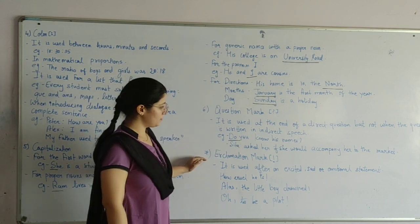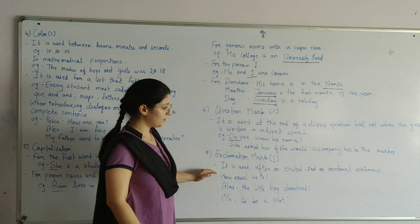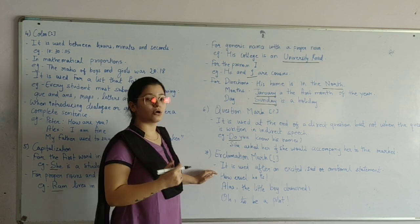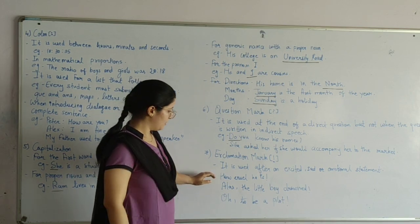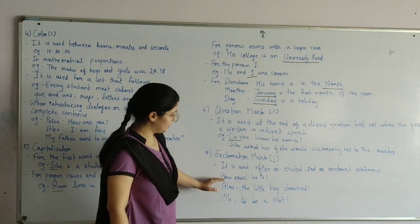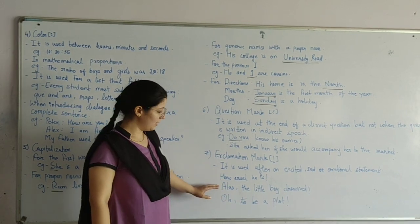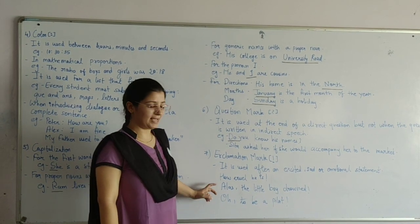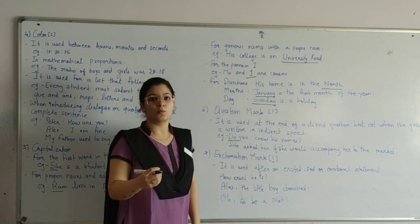Number seven, exclamation mark. It is used after an exciting, sad, or emotional state. For example, how will he be this! Next, alas, the little boy John! And last, oh, to be a pilot! Thank you.